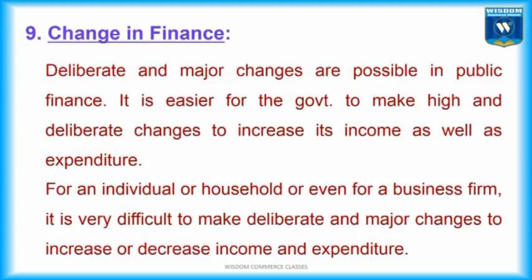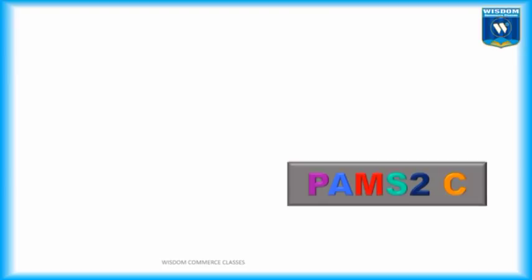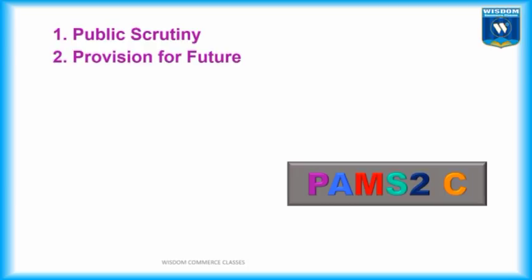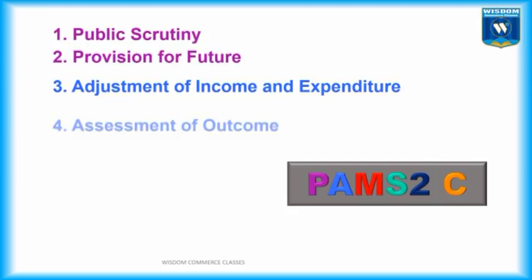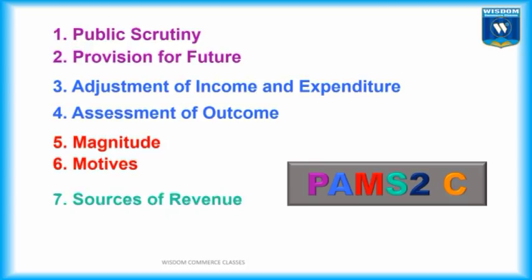Let us revise the points once again: 1. Public Scrutiny, 2. Provision for Future, 3. Adjustment of Income and Expenditure, 4. Assessment of Outcome, 5. Magnitude, 6. Motives, 7. Sources of Revenue, 8. Sources of Borrowings, 9. Change in Finance.